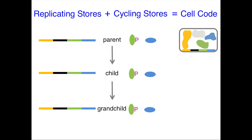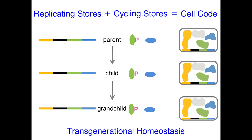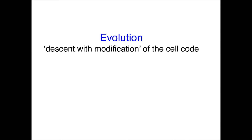The return to a similar configuration of the cell code in every generation must underlie the tendency of living organisms to maintain similar form and function from one generation to the next — a transgenerational homeostasis. Understanding how cell codes change despite this homeostasis impacts biology and medicine. For example, evolution occurs through descent with modification of at least the cell code.